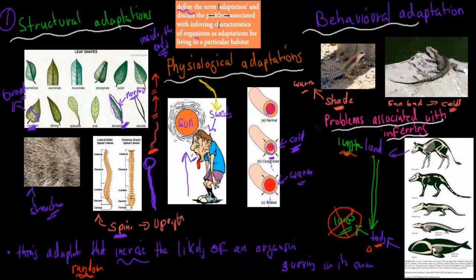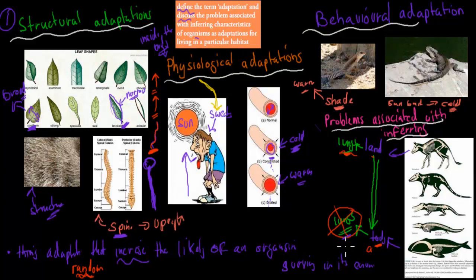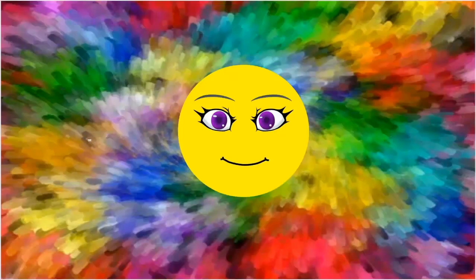To summarize: define adaptation — it's something that increases the likelihood of an organism surviving in its environment. There are three types: structural, physiological, and behavioral. For the second part, the whale example shows we can't just say its lungs are an adaptation for breathing oxygen in water, because its habitat changed over time. Those lungs used to be useful on land but are no longer the same positive influence — it would probably be better off with gills. Hope that was useful — thanks for watching.